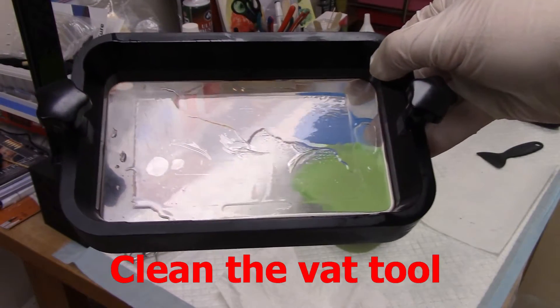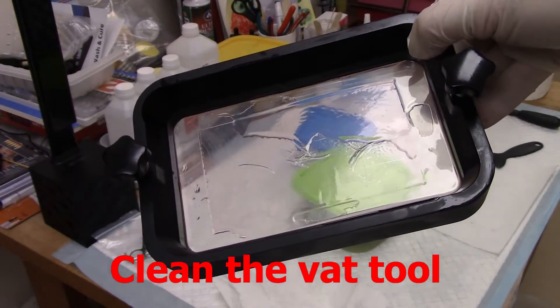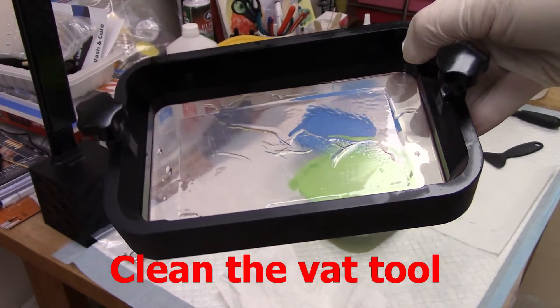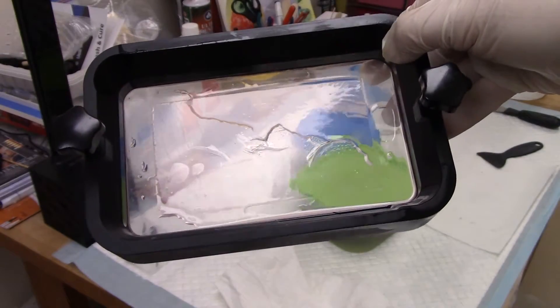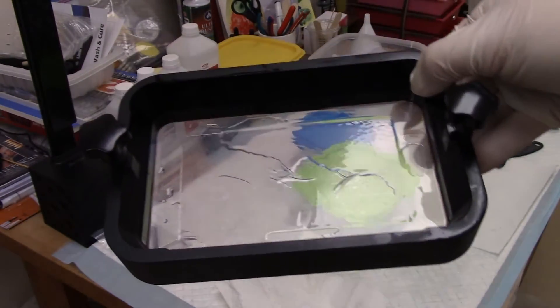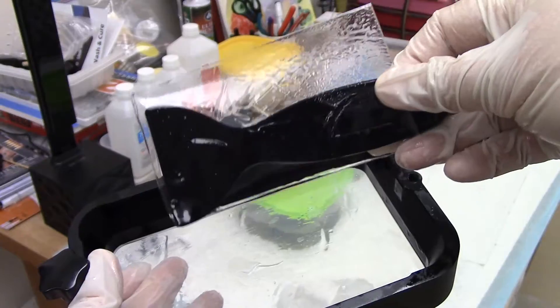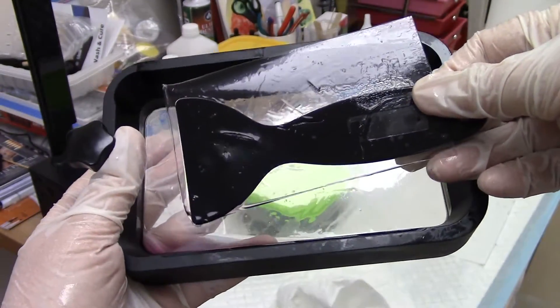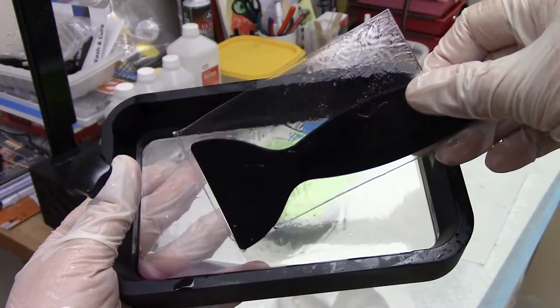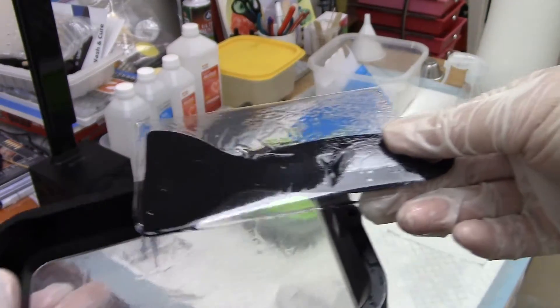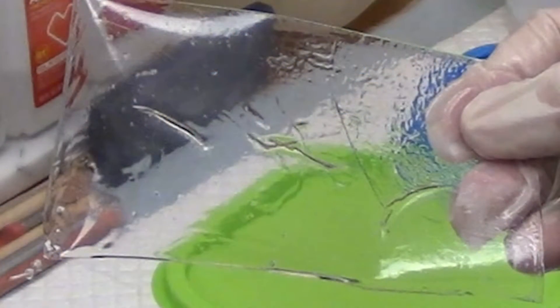So I ran the Clean the Vat tool on my printer, and it exposes the entire LCD screen for 60 seconds, and you get this rectangle in the bottom of your vat. Then you carefully use your plastic spatula to remove it, and it pulls out all those deformities you see on the bottom. So now the question is, why did they occur?